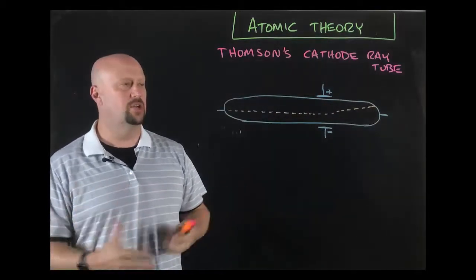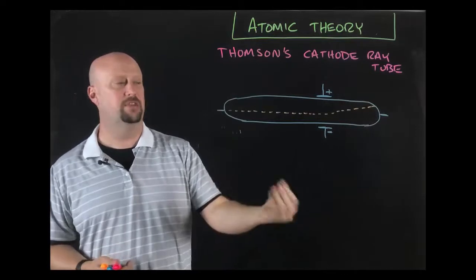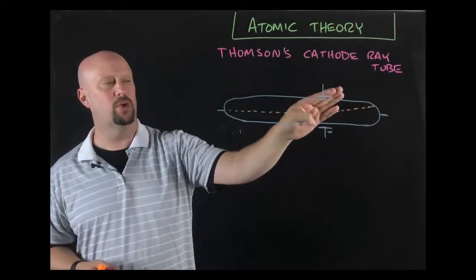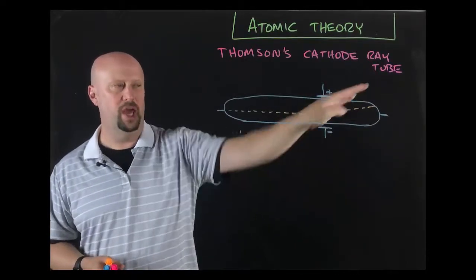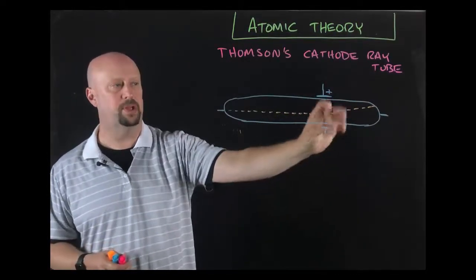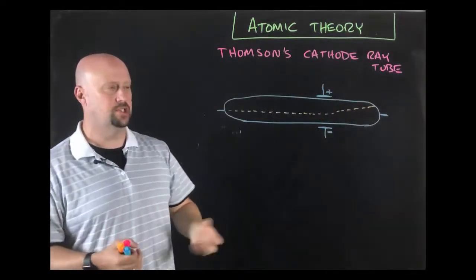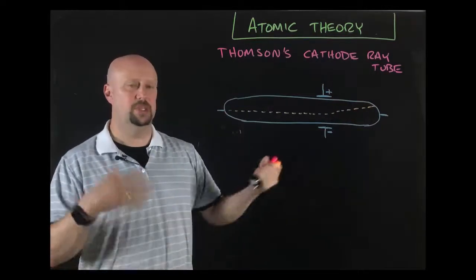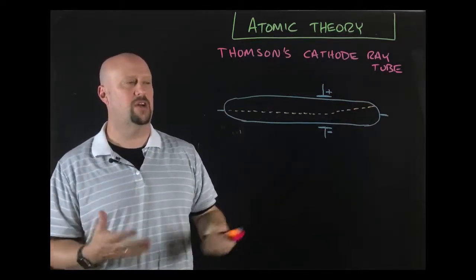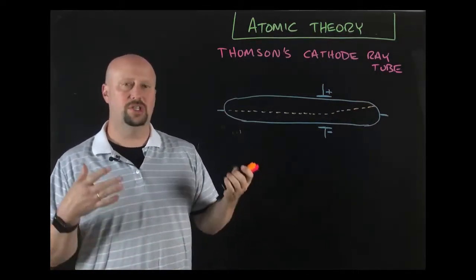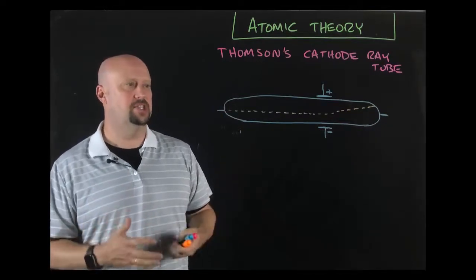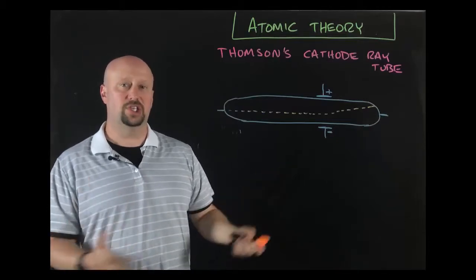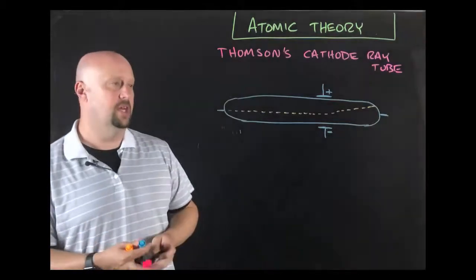That seems pretty weird because this is matter going on here and he's just got these poles. Why is it changing its course? Thompson's obvious conclusion is that it must be negatively charged. I've got a negative charge here, positive charge up there. It's going towards the positive and away from the negative. We all know like charges repel and opposite charges attract.